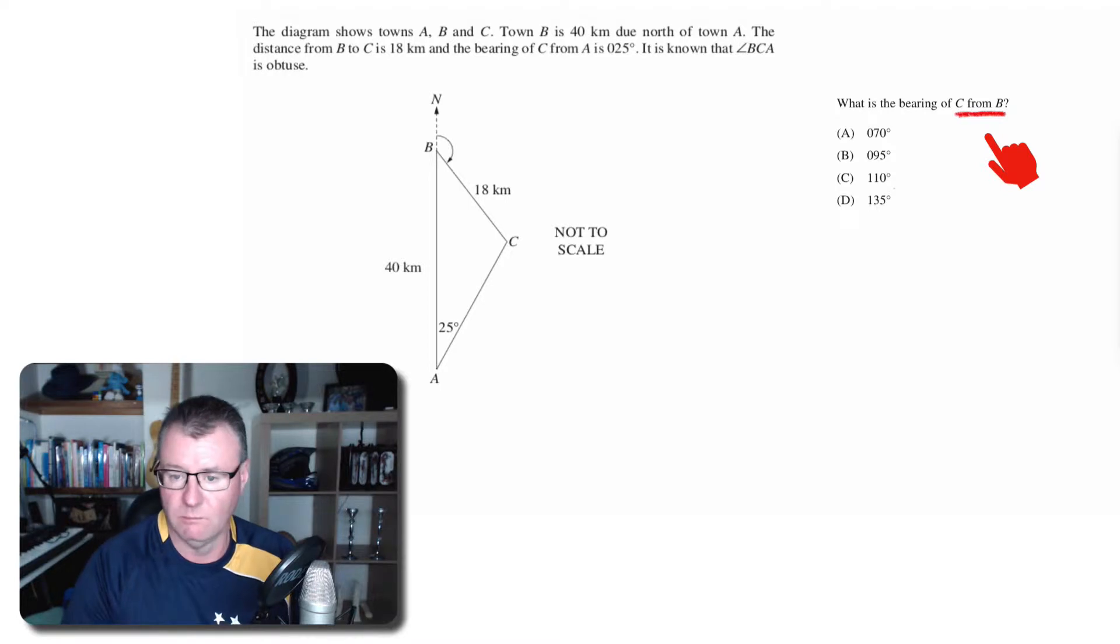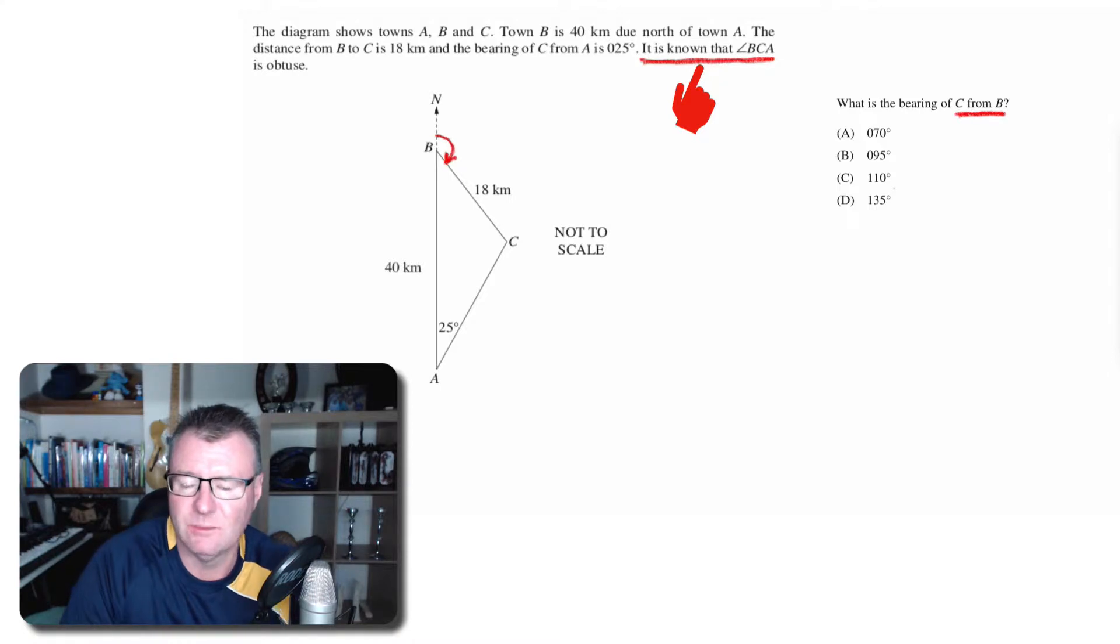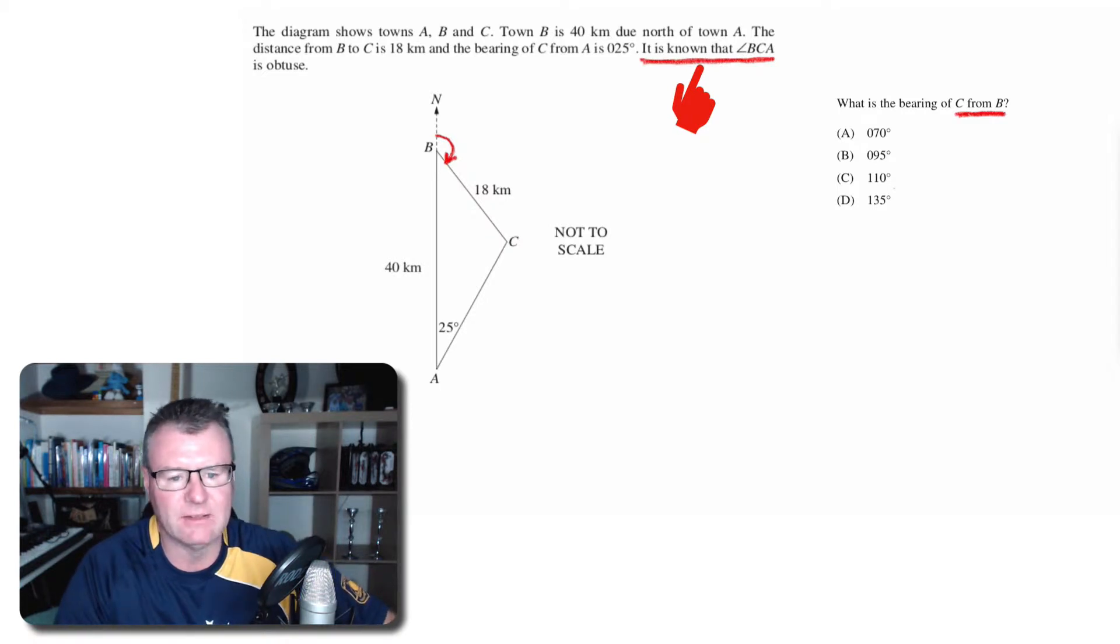if I walk to C, what bearing would I be walking on? Another important bit of information we're given in this question is that angle BCA is obtuse. That means it's going to be more than 90 degrees. Hold on to that thought—we're going to need that a little bit later in the question.